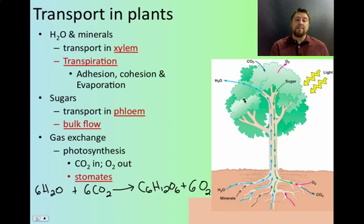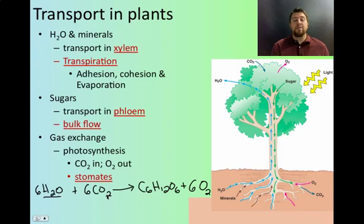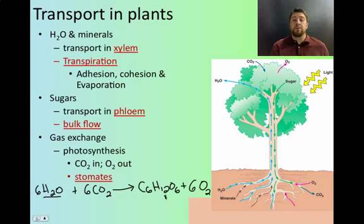These leaves need water, and the water's in the ground, so they have to have a way to get water up to the leaves. They also need CO2, and the leaves are going to be making a bunch of sugars. The leaves aren't going to be able to store all those sugars, so they have to have a way to get those sugars from where they're made, up in the leaves, to some place where they can be stored.